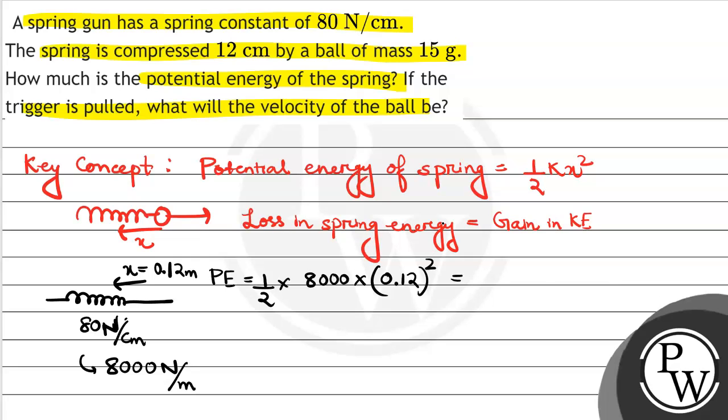If we solve it, we get 57.6 joules. For the second question, we have loss in spring energy which changes into kinetic energy, half mv squared.